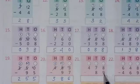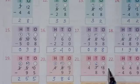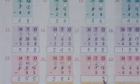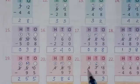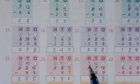Here 8 minus 9 is not possible, so borrow from this digit — this will become 6 and here will be 18. So 18 minus 9 equals 9. Then 6 minus 8 is not possible, so borrow from this digit — this will become 3 and here will be 16. 16 minus 8 equals 8, and this 3 will repeat as it is.